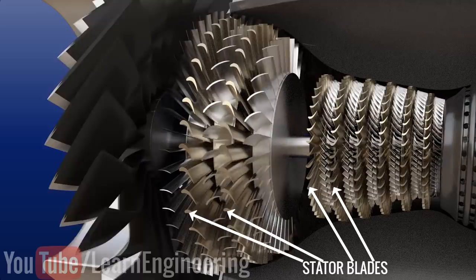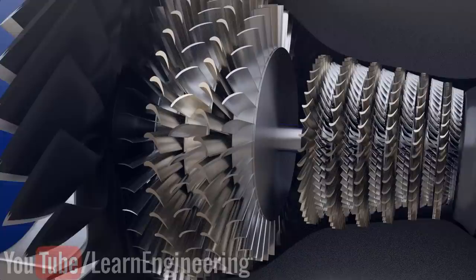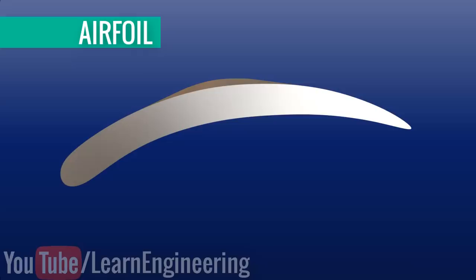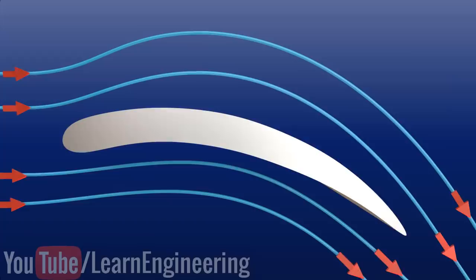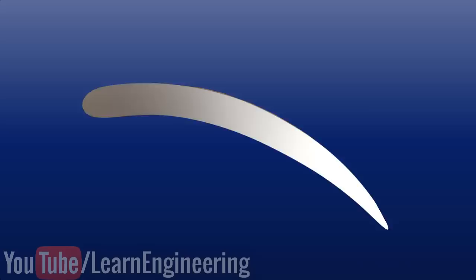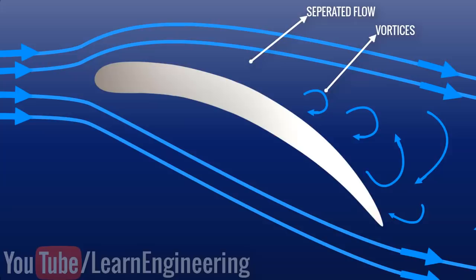The compressor rotor blades have an airfoil cross section. To understand the physics of a compressor stall, let's first learn the physics of airfoils. An airfoil produces lift when fluid flows around it. With variation in angle of attack, the flow around the airfoil changes. However, if you increase this angle beyond a certain limit, the flow streamlines get separated. Vortices will form on the top surface of the airfoil and reverse flow happens in this area — the airfoil has stalled.